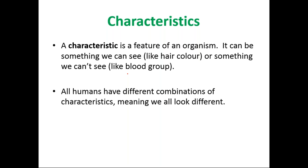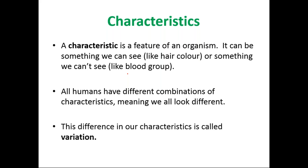All humans have different combinations of characteristics, meaning they all look different. They all look different because of — and we will talk about this later — inherited variation, environmental variation, or both of them. All of these affect different characteristics. The differences in our characteristics are called variation.